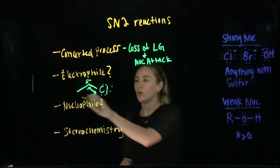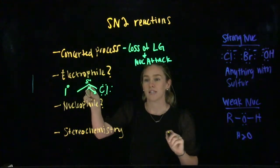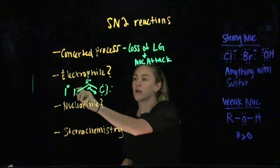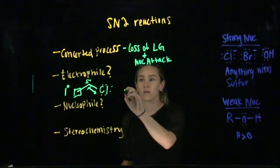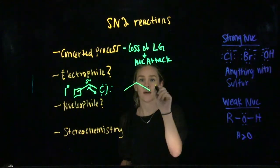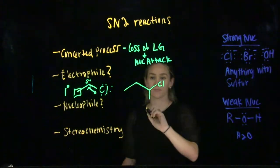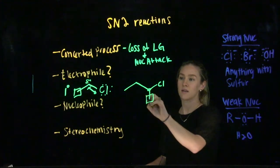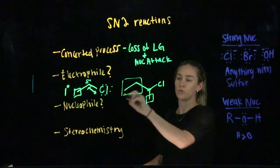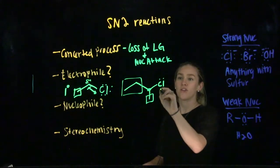This is an example of primary. Your electrophilic carbon is only attached to one other carbon hydrogen group. A secondary electrophile would look something like this. Your electrophilic center has two other carbon groups attached. Remember, our leaving group is going to leave, so we don't get to count it in our primary, secondary, tertiary counting.